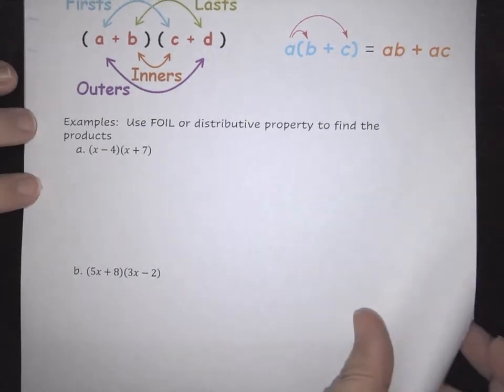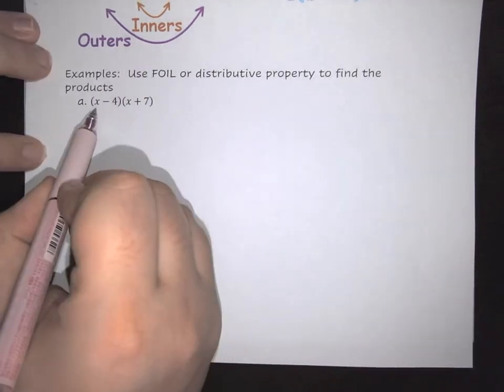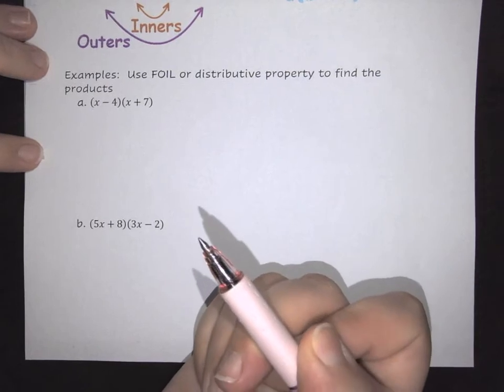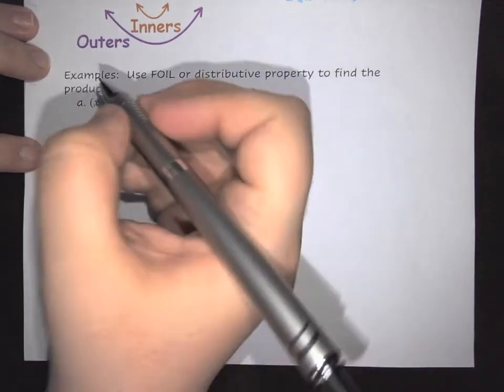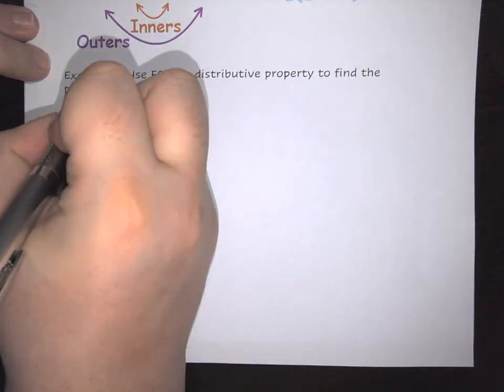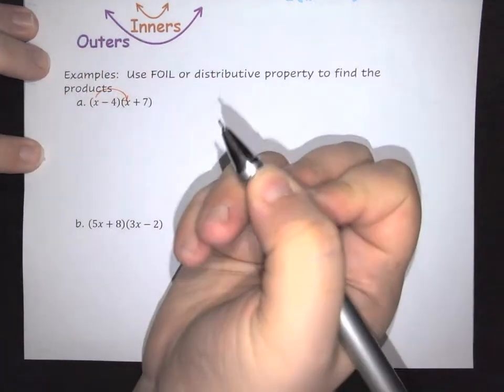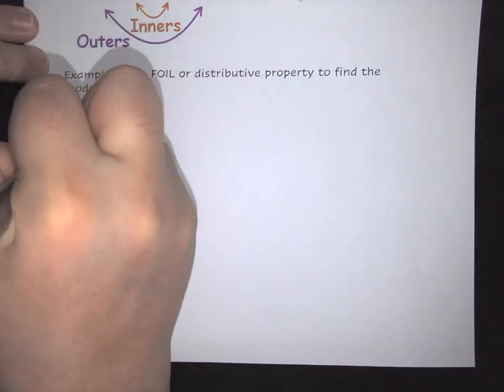So here we're going to go ahead and FOIL. We're going to multiply the two of these together. I'm going to use some colors to try and help. First we have your F, which is your first. We're going to multiply the first two terms together. So this is going to be X times X.